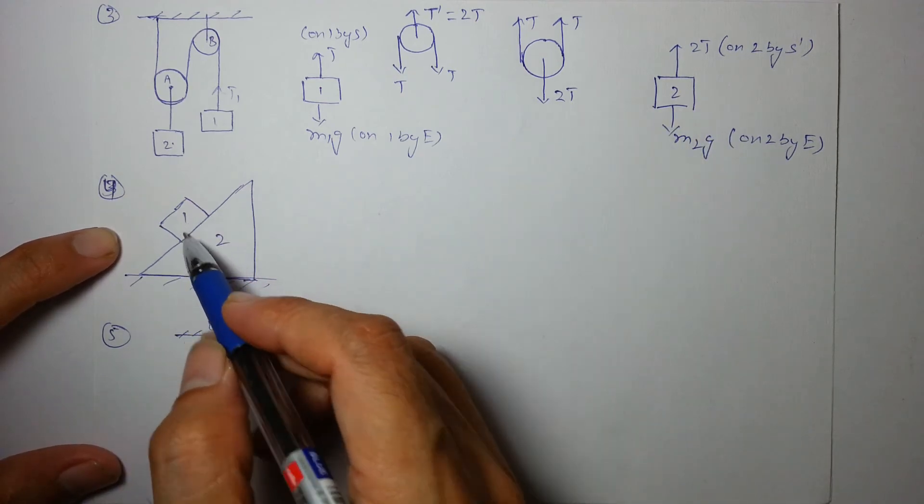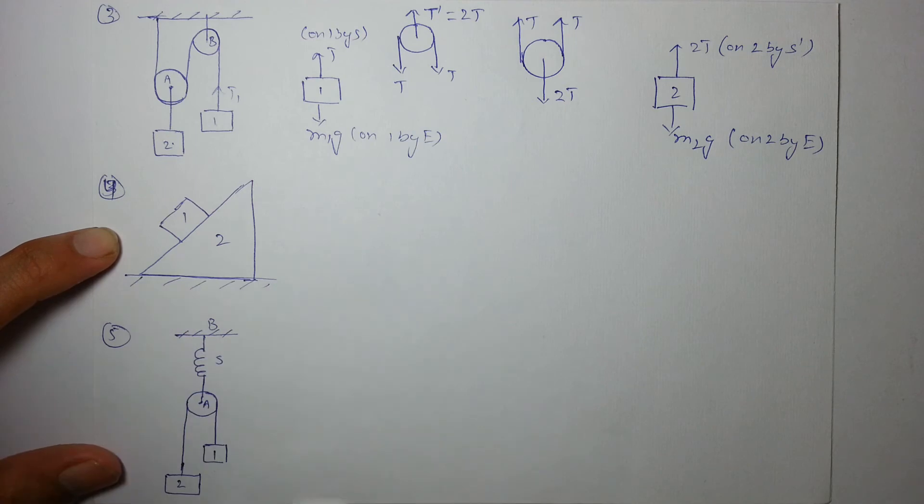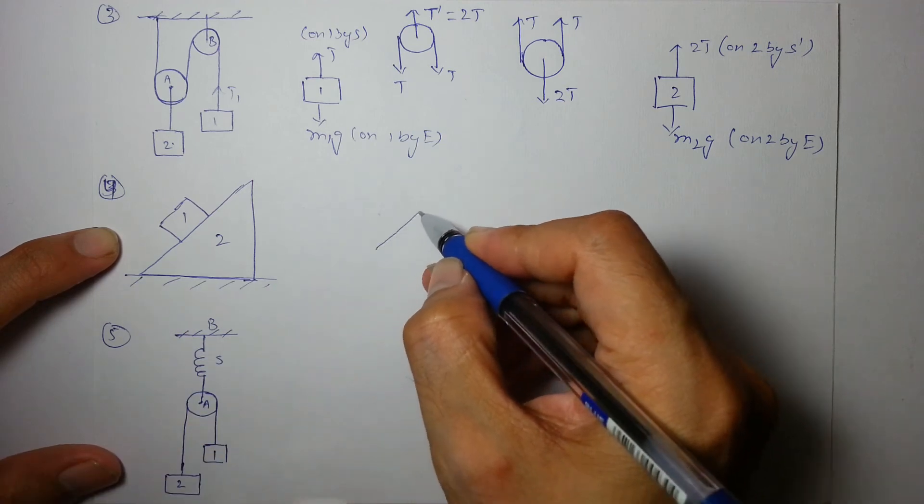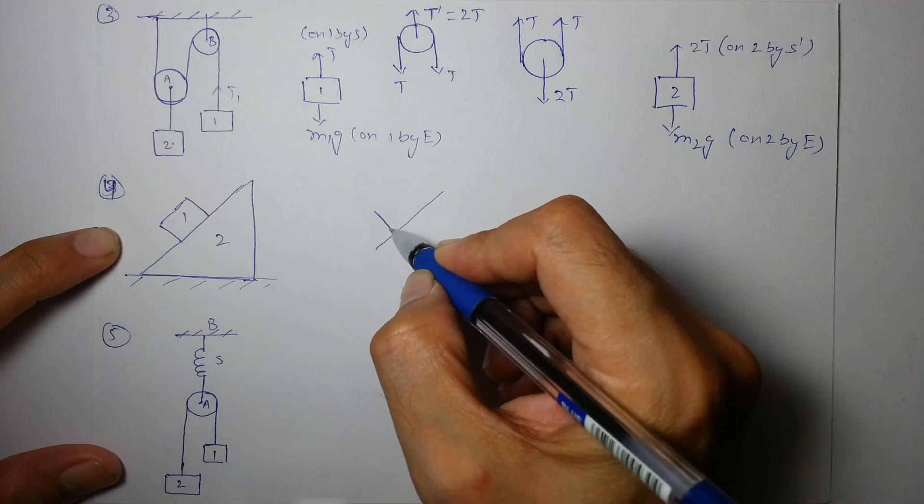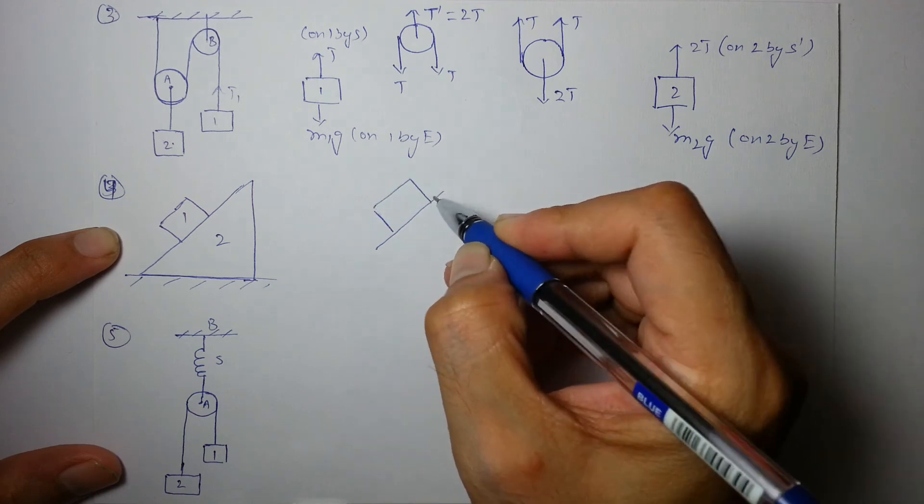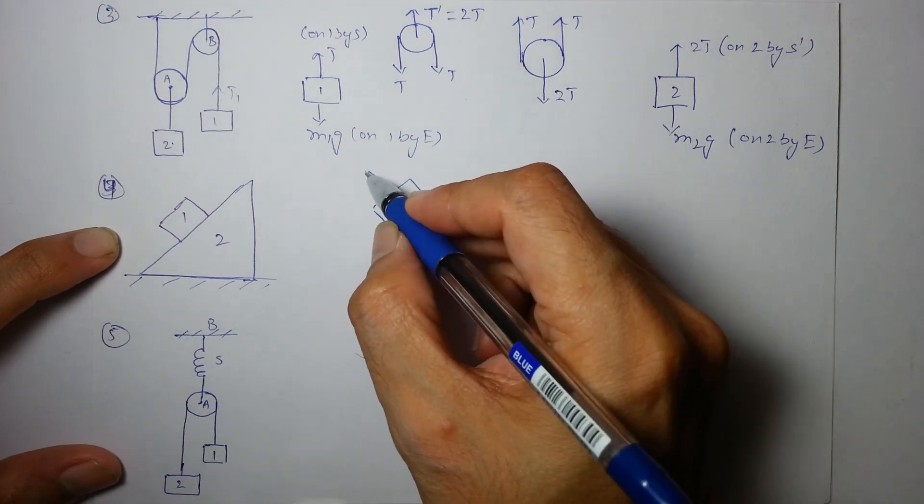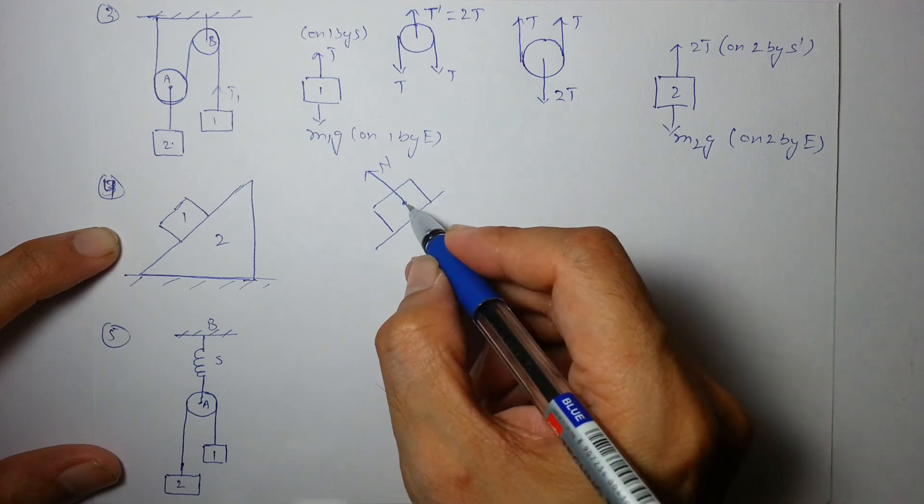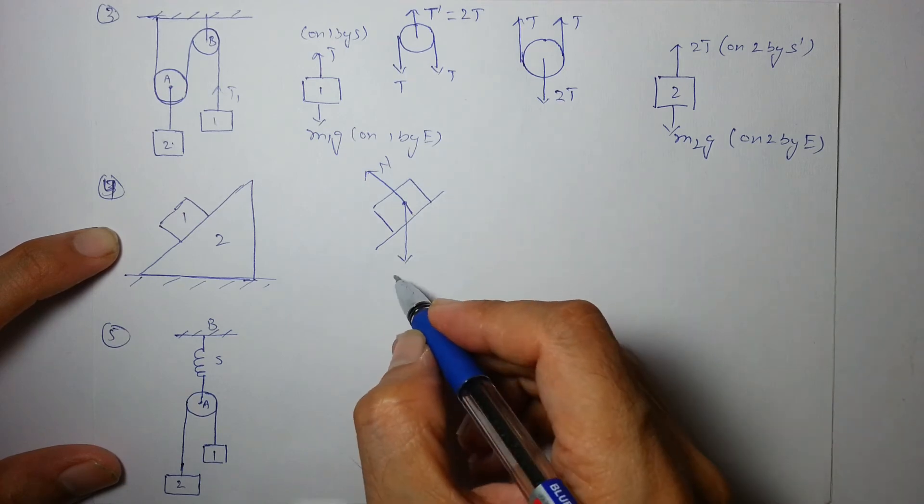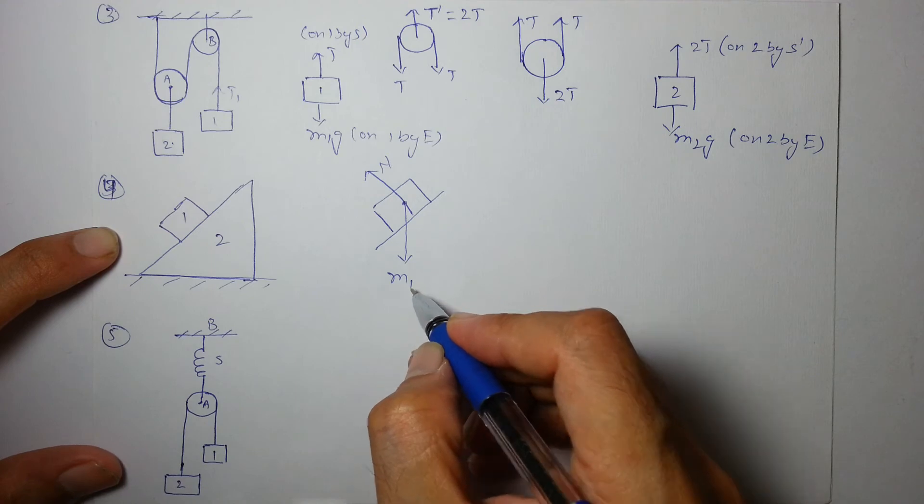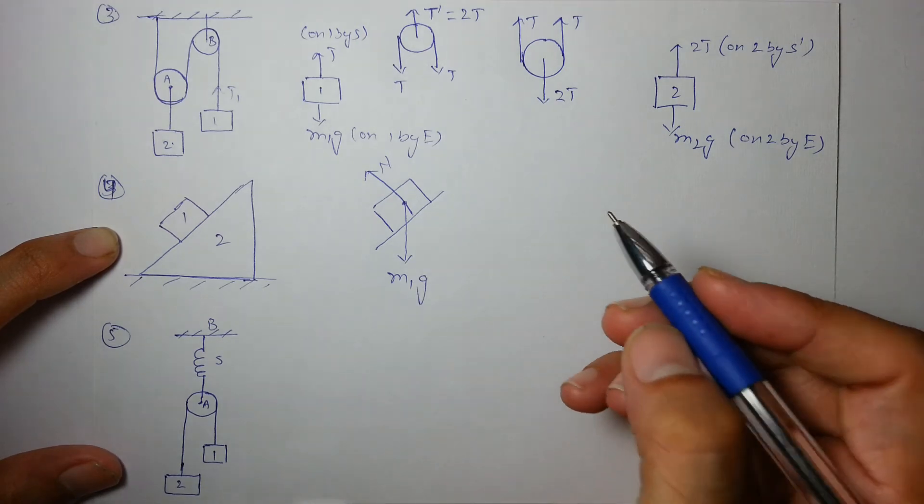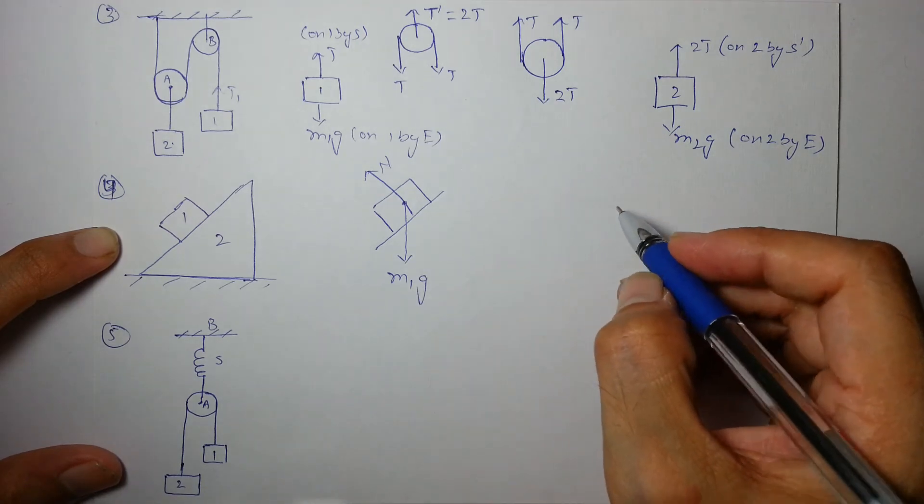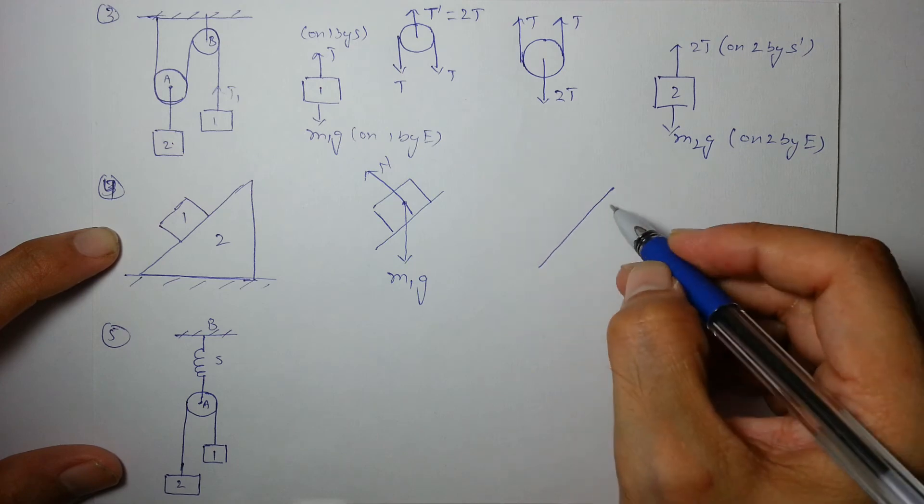So this is another diagram, we have to draw their FBD. Let's start with the first one. This contact is there, so there will be n, and because of its weight it will have another force m1g. So these are the only two forces, friction is not there because we haven't studied it yet.